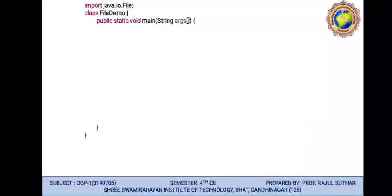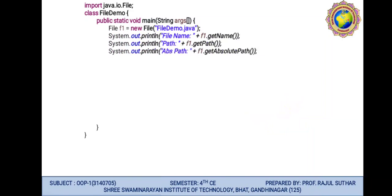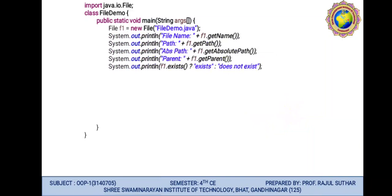Here is an example for a file demo. The class name is FileDemo with public static void main(String[] args). File f1 = new File("FileDemo.java") — that is our file. We create an instance: System.out.println("File name: " + f1.getName()). We also require the path: System.out.println("Path: " + f1.getPath()). System.out.println("Abs path: " + f1.getAbsolutePath()). System.out.println("Parent: " + f1.getParent()). And System.out.println(f1.exists() ? "Exists" : "Does not exist").